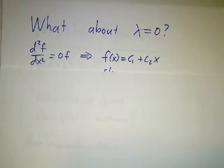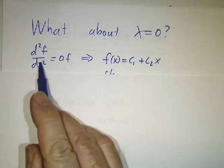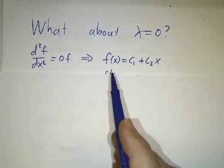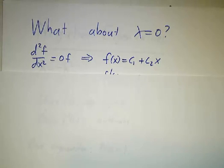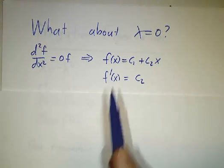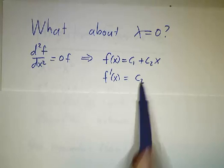If 0 is an eigenvalue, then the second derivative of f must be 0, which means f must be a constant plus another constant times x. And now the derivative of f is going to be the second constant.